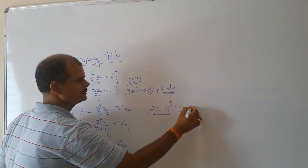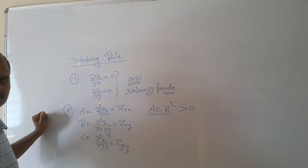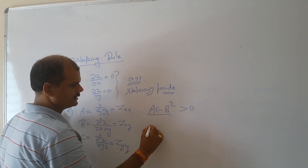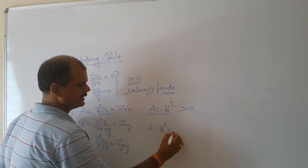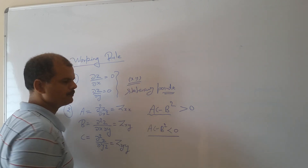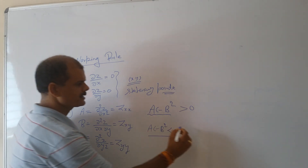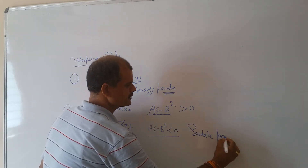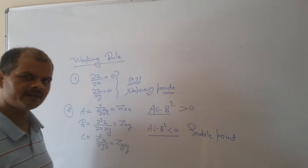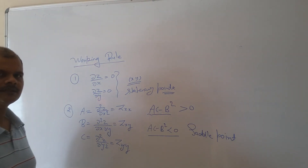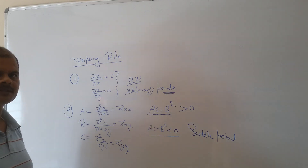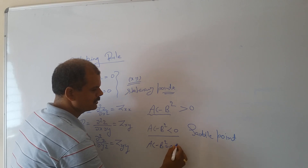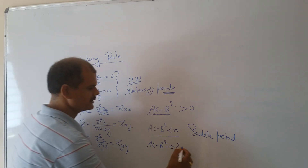If AC minus B² is positive at a stationary point, we get an extrema point. If AC minus B² is less than 0 at the stationary point, those stationary points are called saddle points — points at which partial derivatives are 0 but which are not points of maxima or minima. If AC minus B² equals 0, we need further investigation — no conclusion can be drawn.